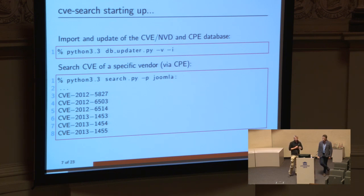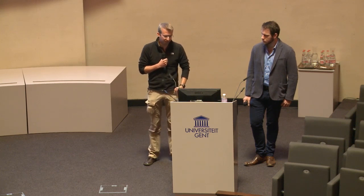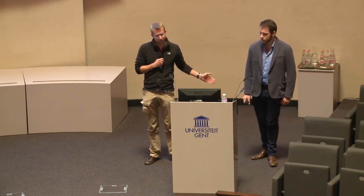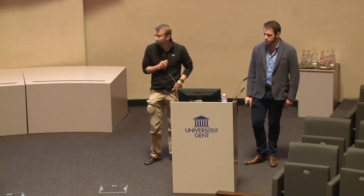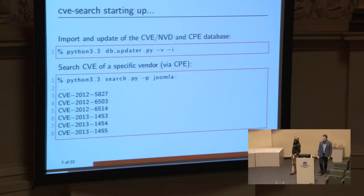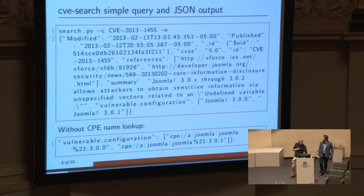When you clone the repository, you fetch all the information for the first time by calling db_updater — straightforward to call, with indexing at the same time. It takes some time because the NVD database is more than 16 years old. Then you have all CVEs locally. For a quick search, I'm using Joomla as an example — a lot of people still use this CMS. You can search on a specific product name using CPE names, and it returns all matching CVEs for Joomla.